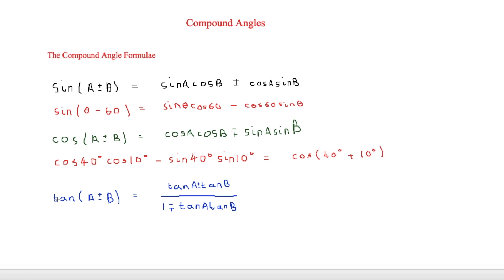The tangent formula says that tan(A ± B) is equal to tanA ± tanB over 1 ∓ tanA tanB — again, the sign works the same way as with cos, it's the other way round. Those are the three compound angle formulae given in the formula book, and they will be the basis for what we learn later in this video.